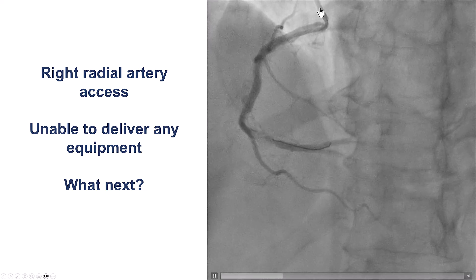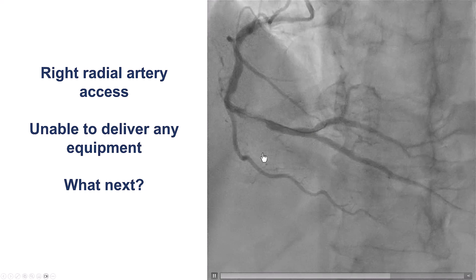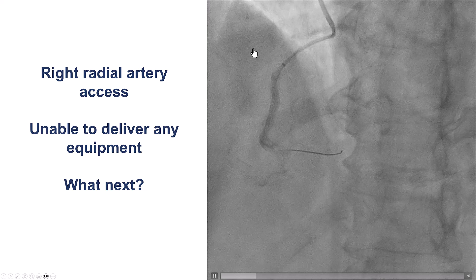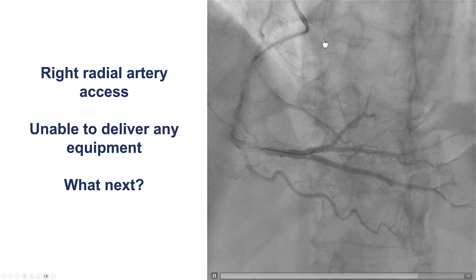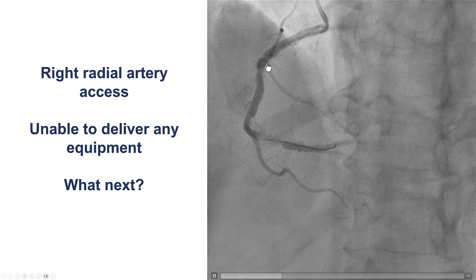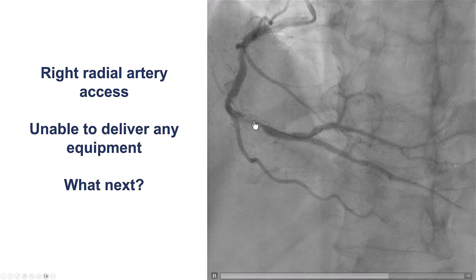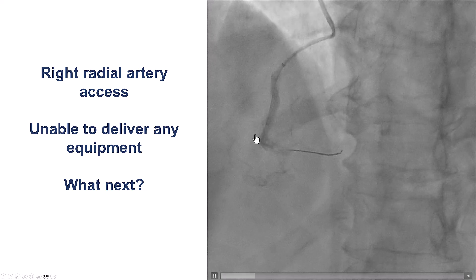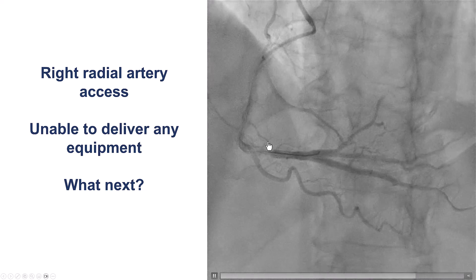We decided to start with PCI of the right coronary artery. However, we had a lot of difficulty with engaging the vessel using radial access, despite using a guide extension. The lesion is after a large bend and also has severe calcification.